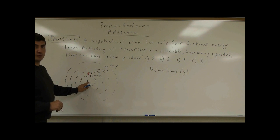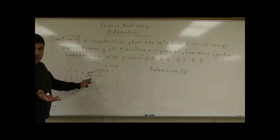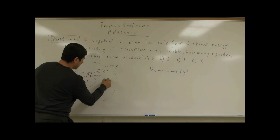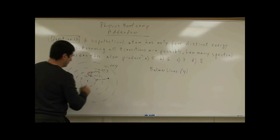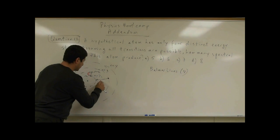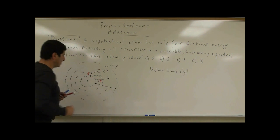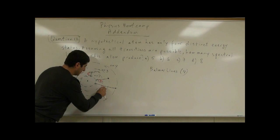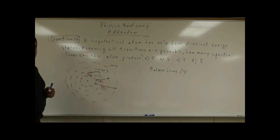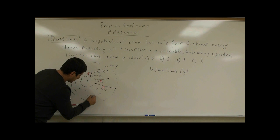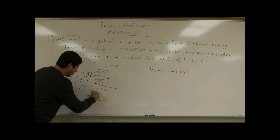The electron can't go below n equals 1 — it can't get any closer to the proton. From n equals 3 down to n equals 1, that's the second possible jump. From n equals 4 down to n equals 1, that's the third possible jump. And from n equals 3 down to n equals 2, that's the fourth possible jump.